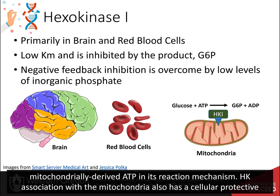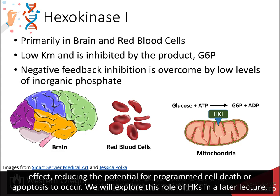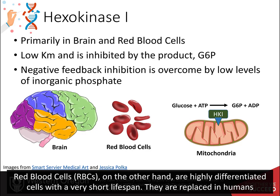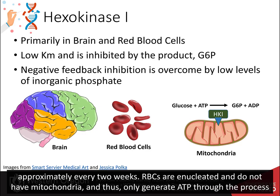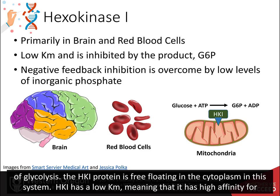Hexokinase's association with the mitochondria also has a cellular protective effect, reducing the potential for programmed cell death or apoptosis to occur. We will explore this role of the hexokinases in a later lecture. Red blood cells, on the other hand, are highly differentiated cells with a very short lifespan. They are replaced in humans approximately every two weeks. Red blood cells are enucleated and do not have mitochondria, and thus only generate ATP through the process of glycolysis. The HK1 protein is free-floating in the cytoplasm in this system.